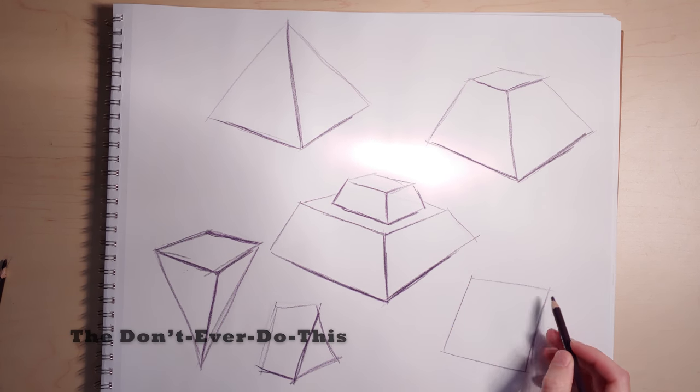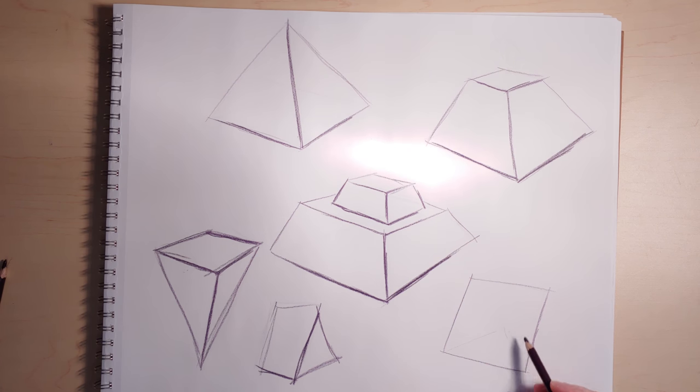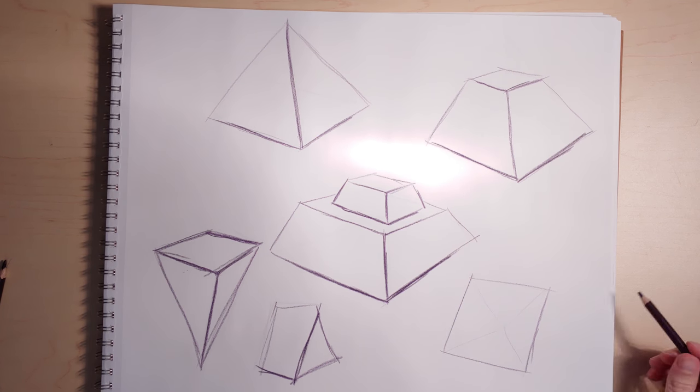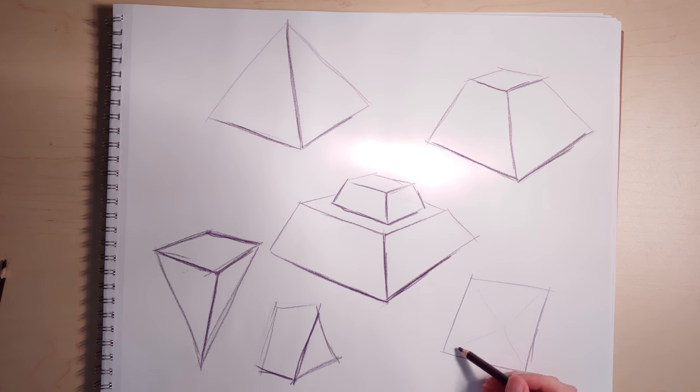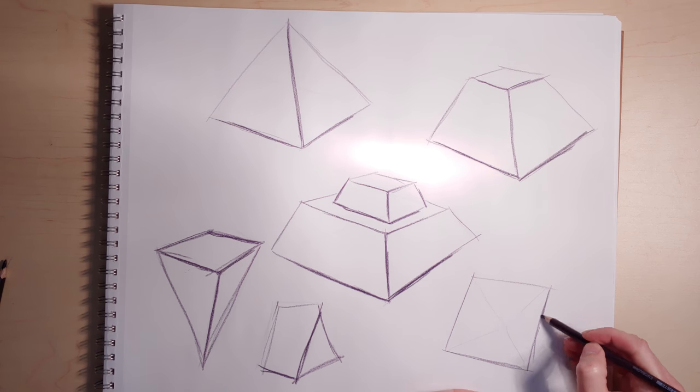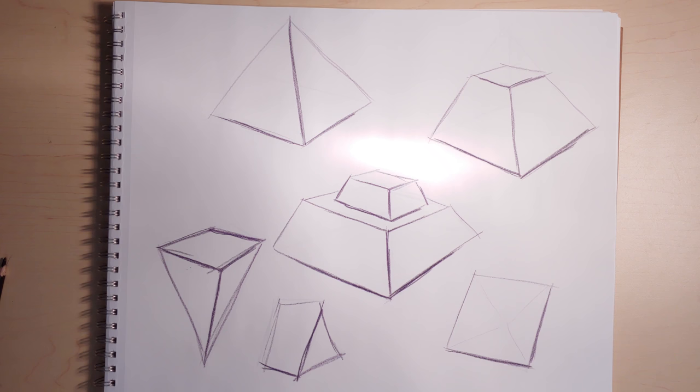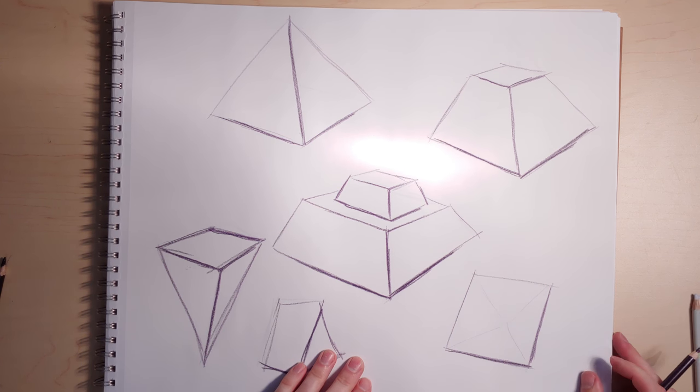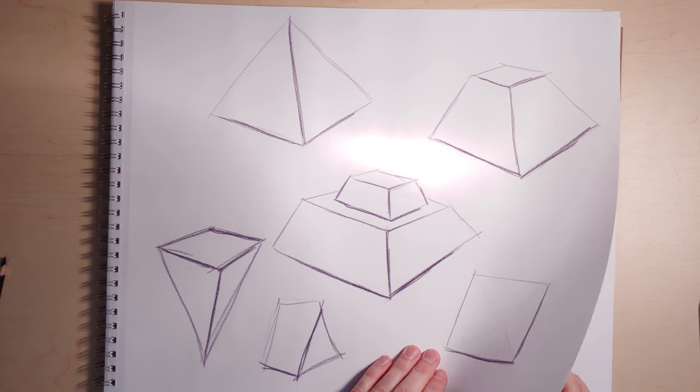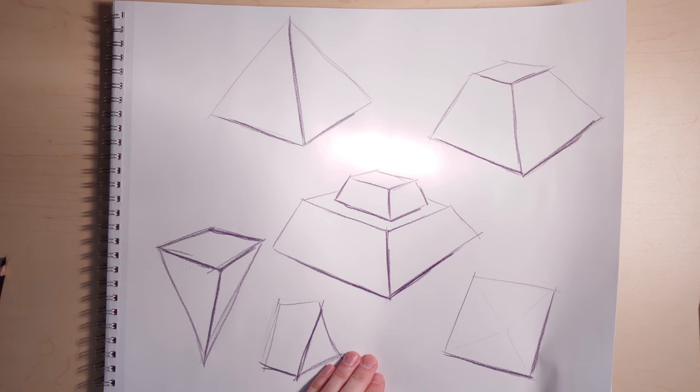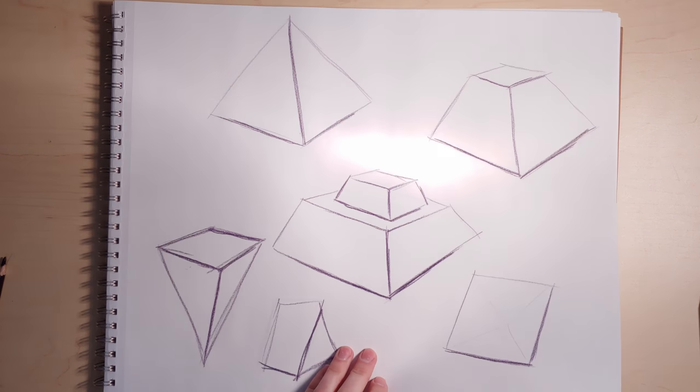And this one I call the don't ever do this, because you've turned to where you can't actually see anything but one side of the pyramid. So when you're drawing forms, you always want to choose an orientation where you can see at least two sides, because that is the minimum that you need to create the illusion of depth. Three is always best, and one just sort of goes flat into the background.